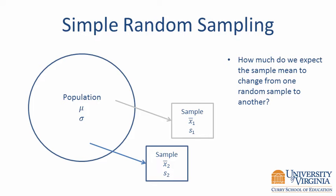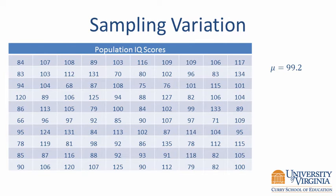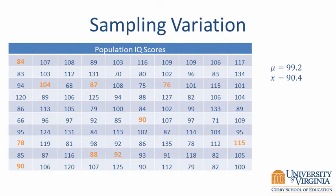To get a better understanding of sampling variability, let's consider a short example. Suppose we would like to know the average IQ score among the 100 students who registered for tutoring at a local high school. This slide shows IQ scores for everyone in the population. The population mean is 99.2. In practice, you would not know the IQ scores for everyone in the population — they are shown here just for the example. IQ tests take about an hour to complete, which prevents you from testing everyone in the population. Therefore, you decide to draw a random sample of 10 students from the population and test them. IQ scores for the 10 participants in your study are highlighted in orange. The sample mean is 90.4, a value slightly below the population mean.